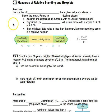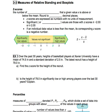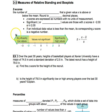Today we are going to talk about measures of relative standing as well as box plots. Box plots are something you've been doing for a while, also called box and whisker plots. So we have some new things to discuss and some review things. One of the new things we're going to be talking about are z-scores, which we will use throughout this course — not just here in this section. Z-scores will be important for a while.